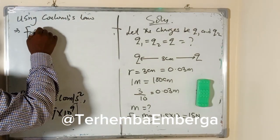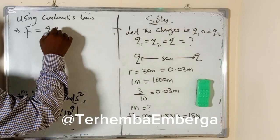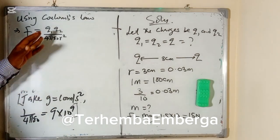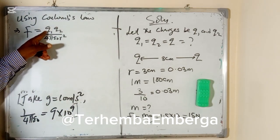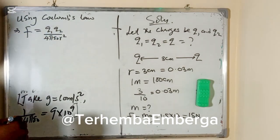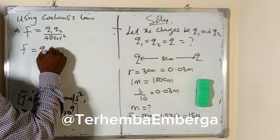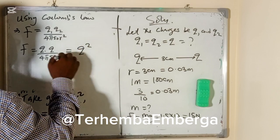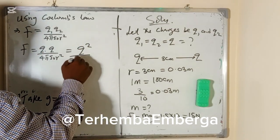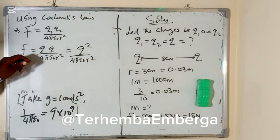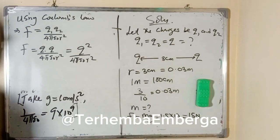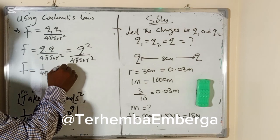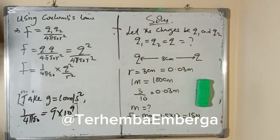Using Coulomb's law: F is equal to Q1 times Q2 all over 4 pi epsilon-naught r squared. Since Q1 is equivalent to Q2, we can say F is equal to Q times Q all over 4 pi epsilon-naught r squared, which we can write as Q squared all over r squared.